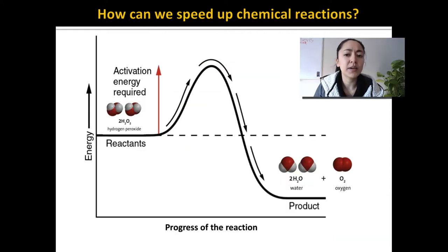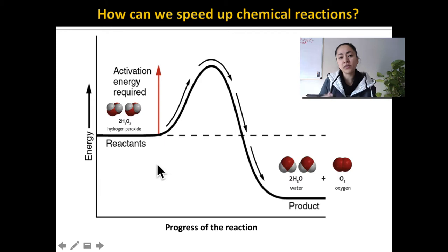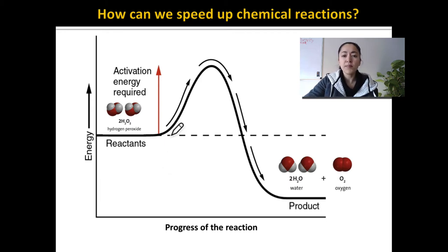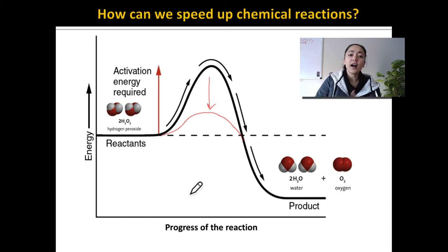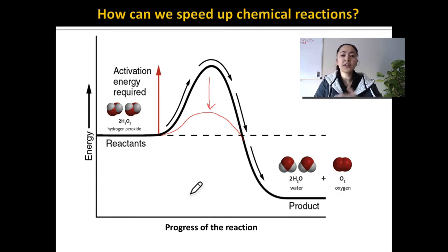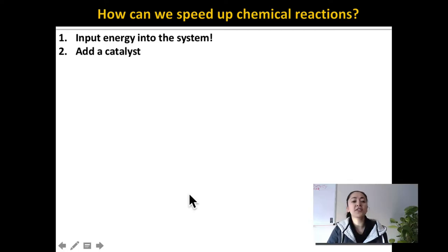Sometimes, within your body, you can't increase the temperature to increase the speed of chemical reactions. And there are many other cases where you just can't manipulate the temperature or light to increase the rate of a reaction. There is actually a way that you can decrease the activation energy — you can lower this hill of activation. Molecules that actually lower this activation energy and speed up chemical reactions are called catalysts.